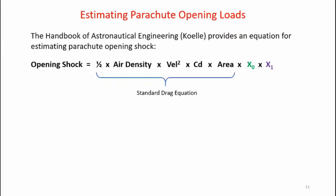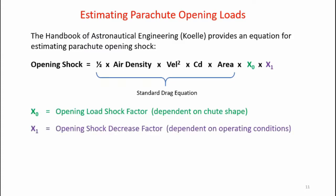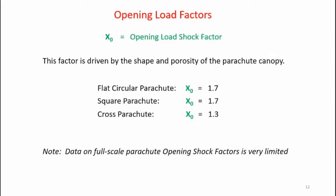The equation comes from the Handbook of Astronautical Engineering. It states that the opening load shock is the drag of the fully open parachute at parachute deployment velocity times a factor called x-sub-zero and x-sub-one. x-sub-zero is known as the opening load shock factor, and that's dependent on the shape of the parachute. x-sub-one is the opening shock decrease factor that depends on the operating conditions of the parachute during deployment.